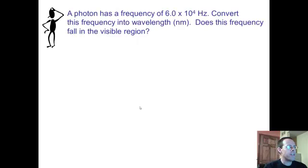Just a quick problem. A photon has a frequency of 6 times 10 to the fourth hertz. Convert this frequency into wavelength in nanometers. Does this frequency fall into visible region? So we've got C equals lambda nu. Do you know what C is? It is 3.0 times 10 to the eighth meters per second. What is the wavelength? We don't know wavelength, we might just put X there.